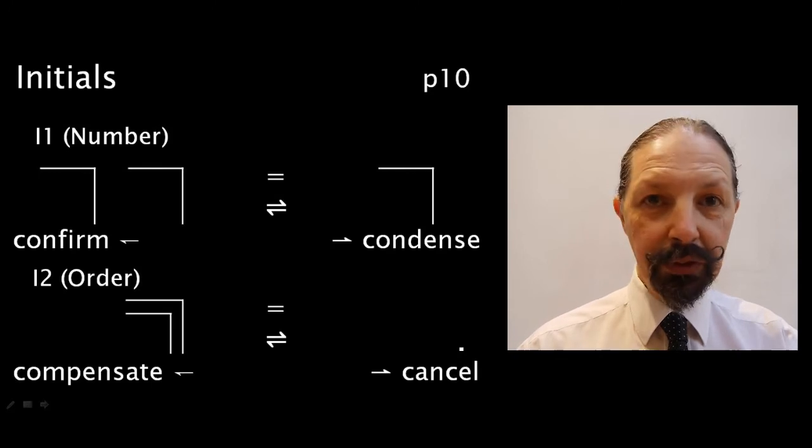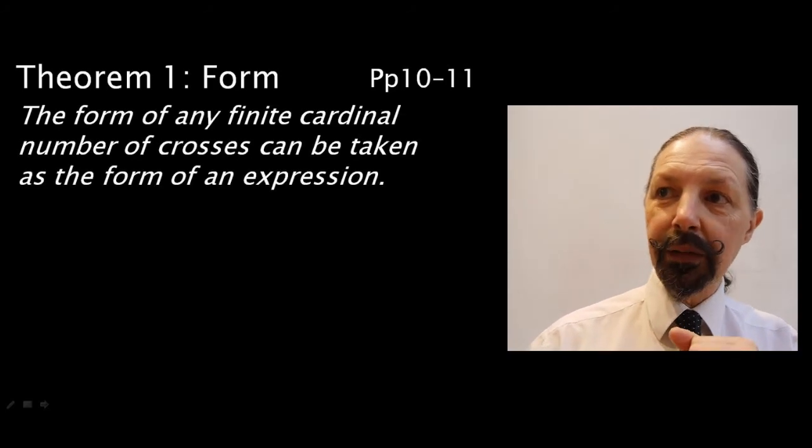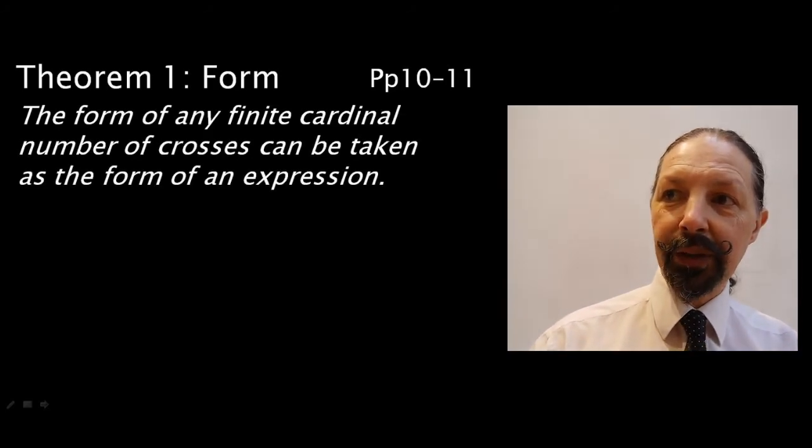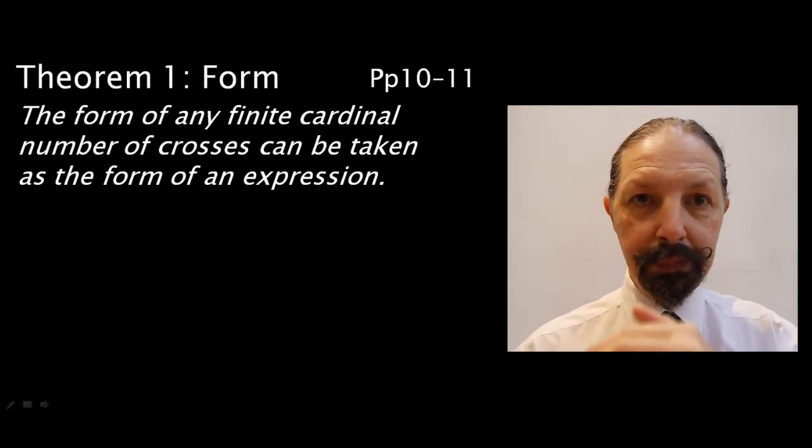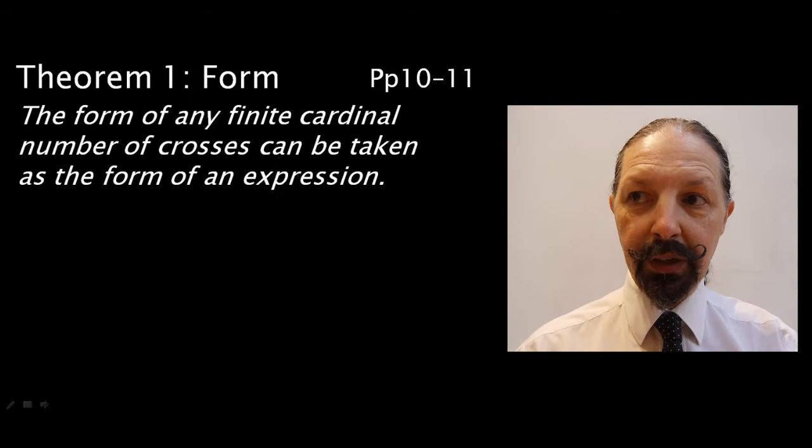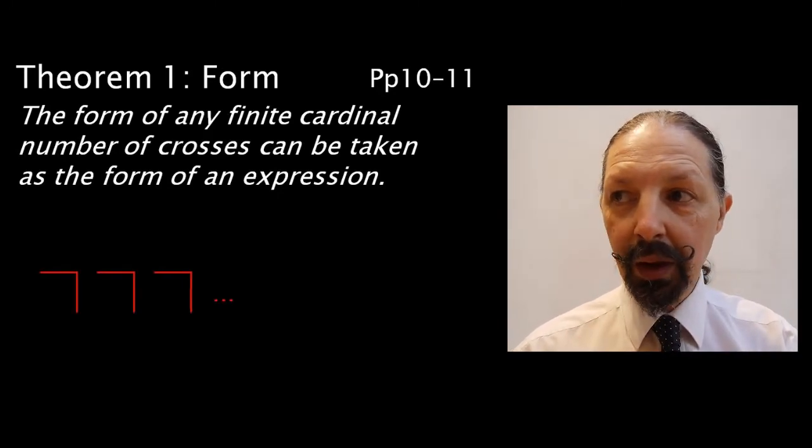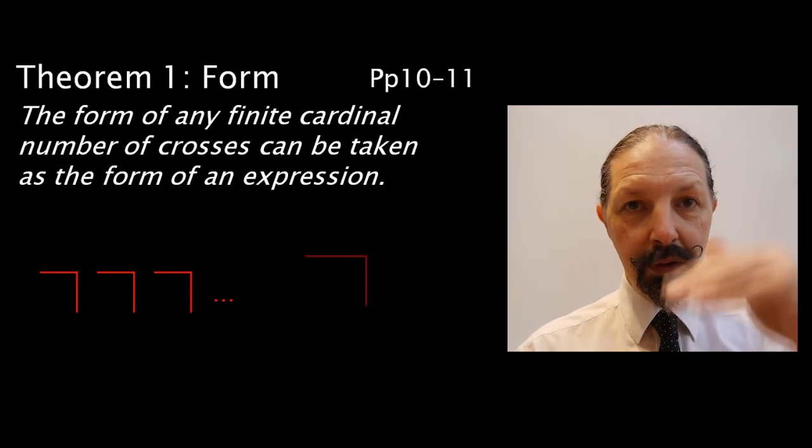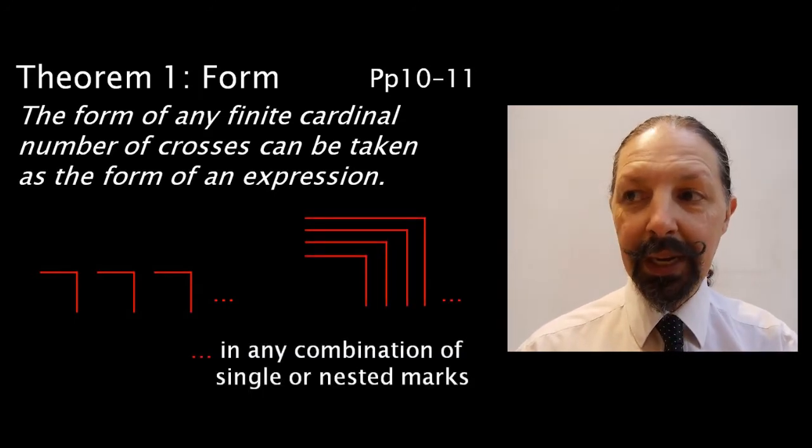So, from those initials, we start off with theorem 1, which is all about form. And it states that the form of any finite cardinal number of crosses can be taken as the form of an expression. So, that can look like this. The crosses can be adjacent. Or it can look like this, and the crosses can be nested. And there can be any number of them, in any combination.